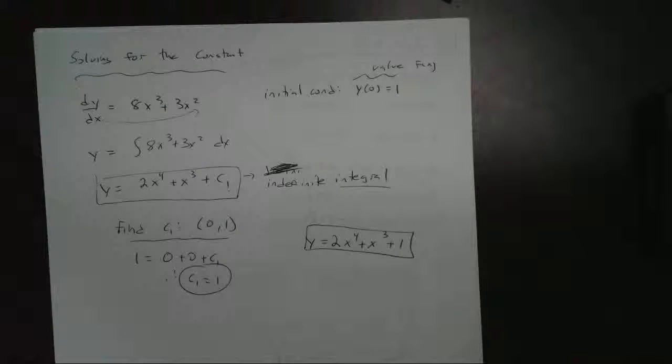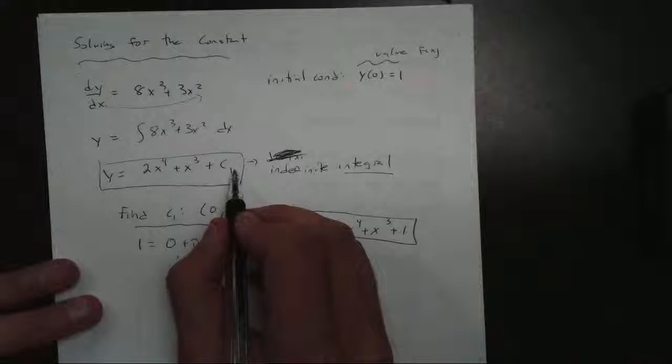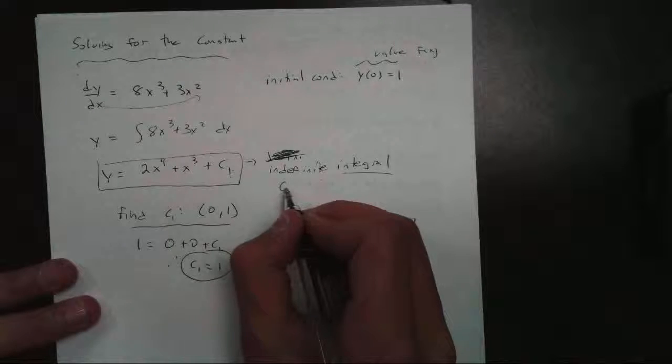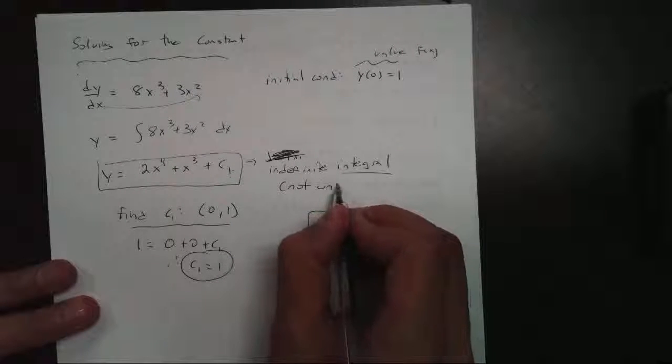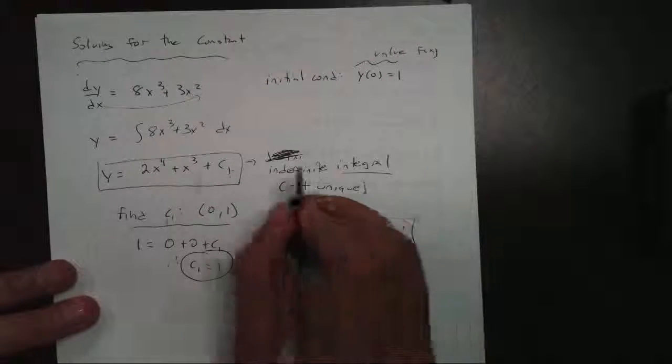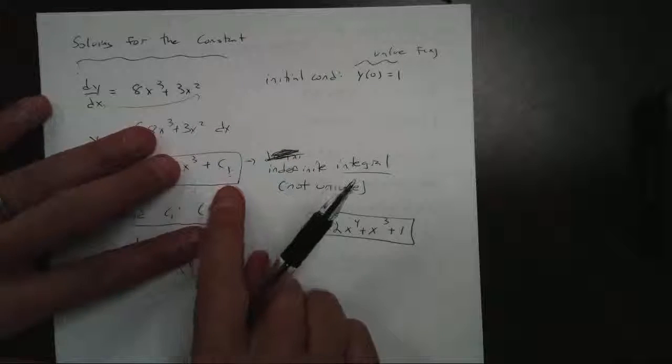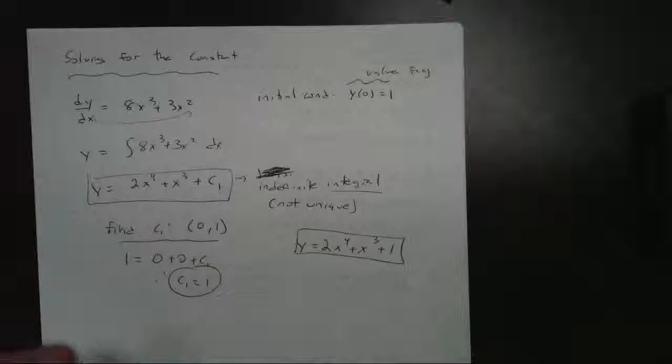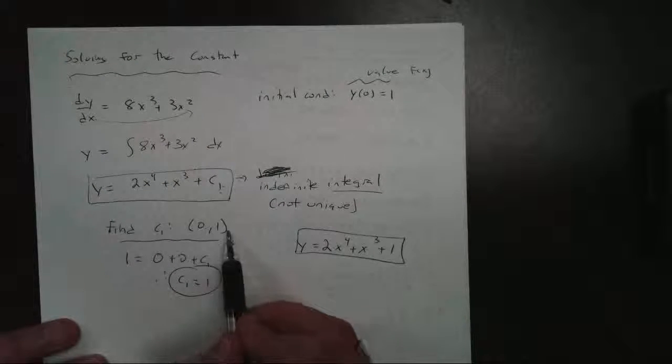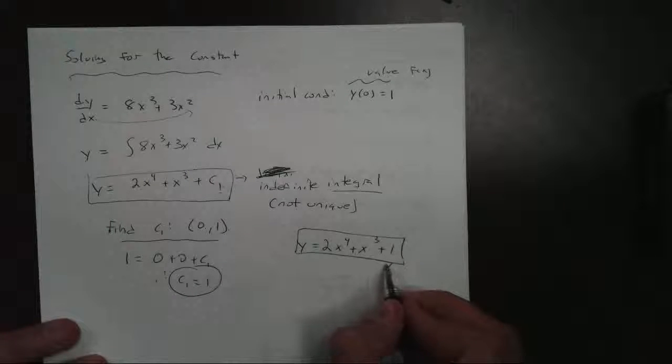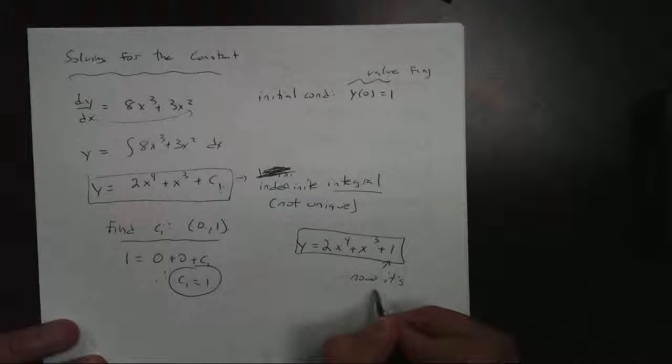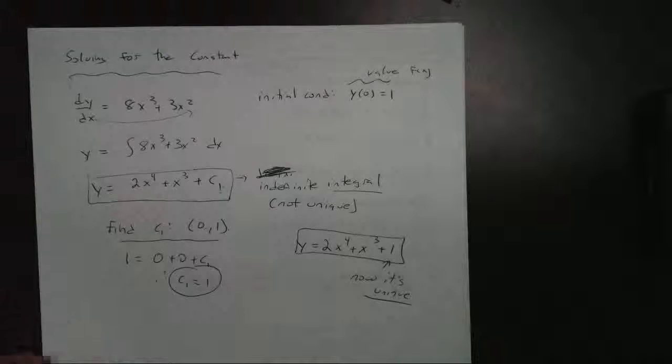By the way, this plus c meant it's not unique. An indefinite integral is what we call not unique because c could be anything. It doesn't make it unique. By giving it a point like 0 comma 1, then it becomes unique. Once you give it like an initial condition, now it's unique because you're giving it value.